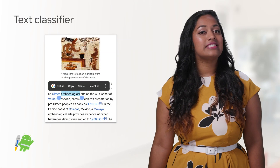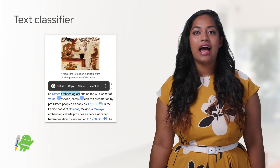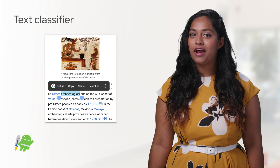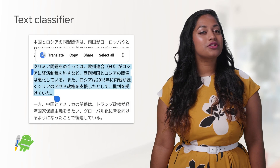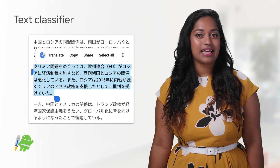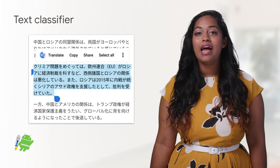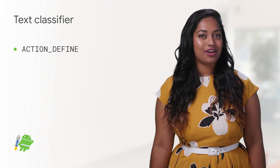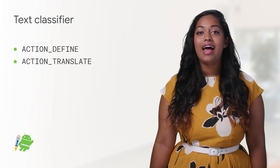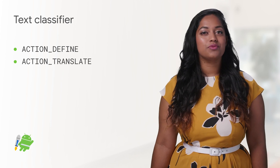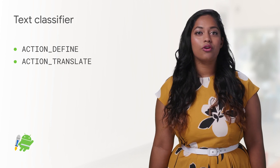Now, if users select text, they can get definitions and translations using Smart Selection because of the new Define and Translate actions. Users can retrieve a definition by highlighting the word and selecting the Define option. Similarly, users can translate foreign text by selecting the text and then choosing Translate. If they click on one of these options, it will trigger Action.Define or Action.Translate, which will trigger apps such as Google Translate or Google Search.